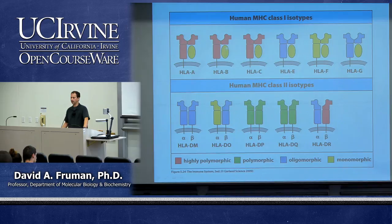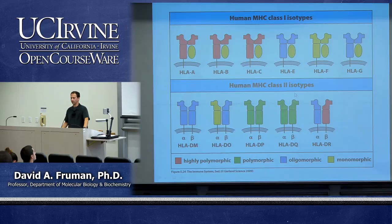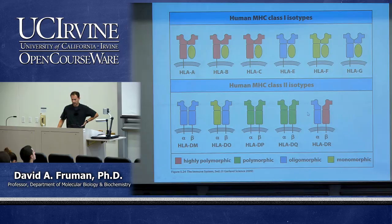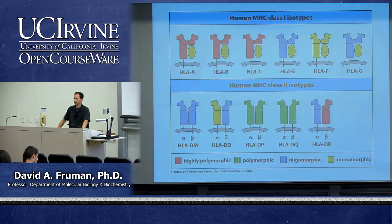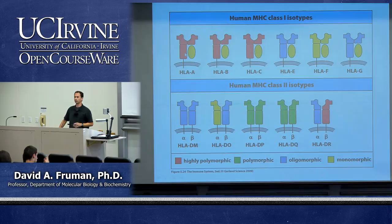So: gene families give you three different class 1 molecules and three different class 2 alpha-beta pairs. Polymorphism means many different alleles in the population for all of these except the HLA-DR alpha chain. Because most people are heterozygous for these alleles, you end up with six different MHC class 1 molecules and up to 12 different MHC class 2 molecules on your cell surface. Polymorphism directly affects which peptides bind — your allele of HLA-A might bind one peptide but not another, while someone else's allele binds the reverse.